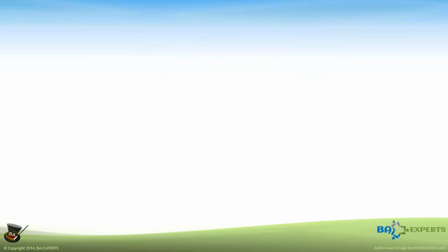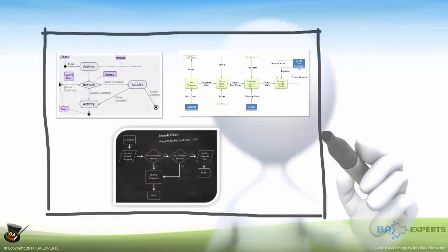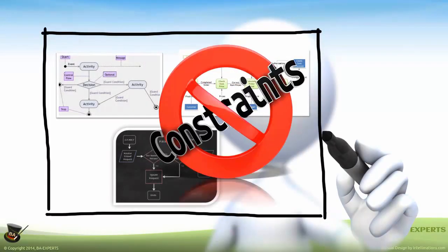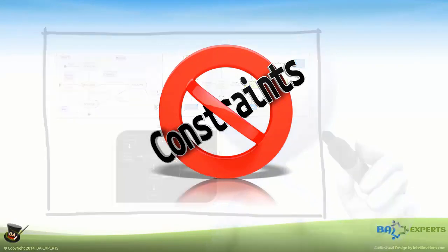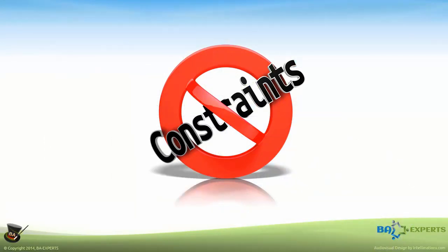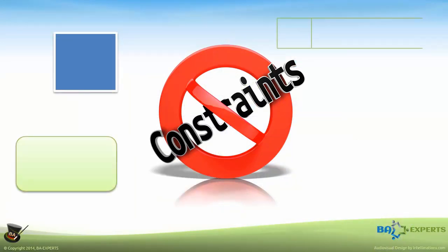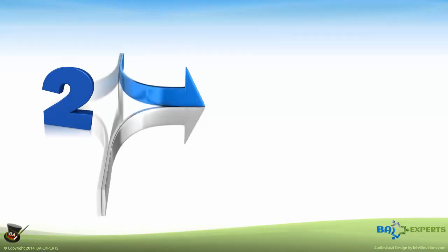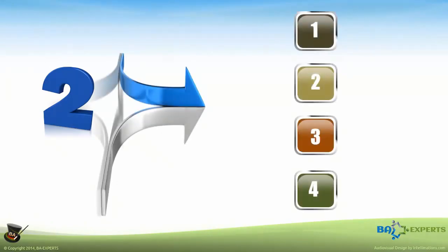Fundamentally, any diagram is simply a picture with constraints. In the case of the DFD, the constraints are which symbols you can use and what each symbol means. There are really only two widely used conventions, and the differences are minimal. Both allow only four basic symbols.